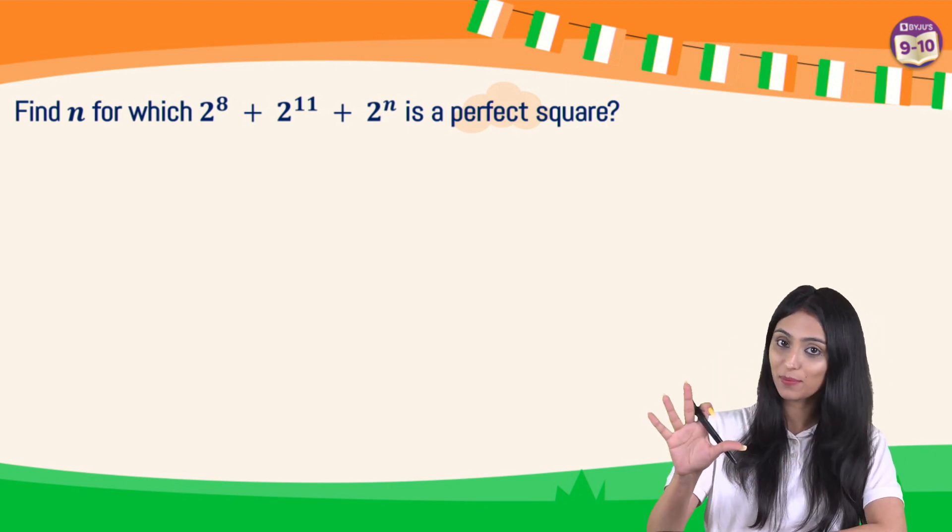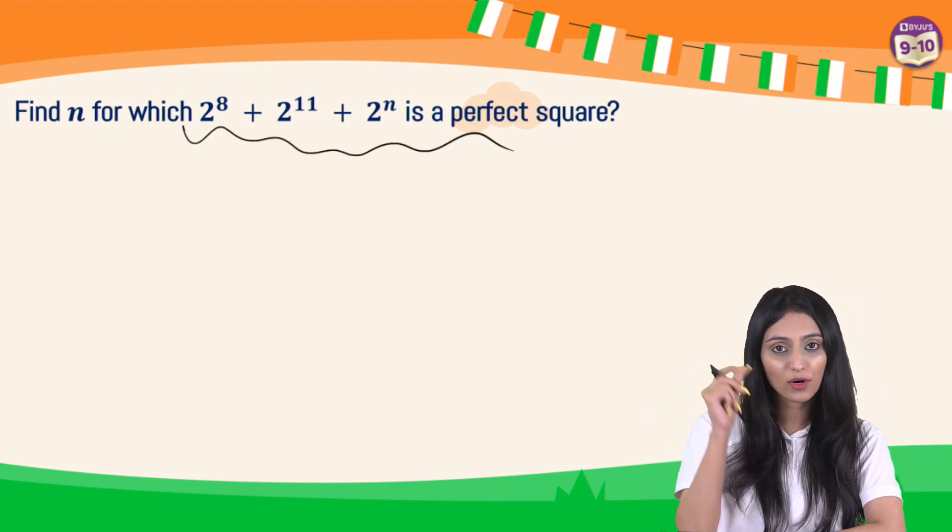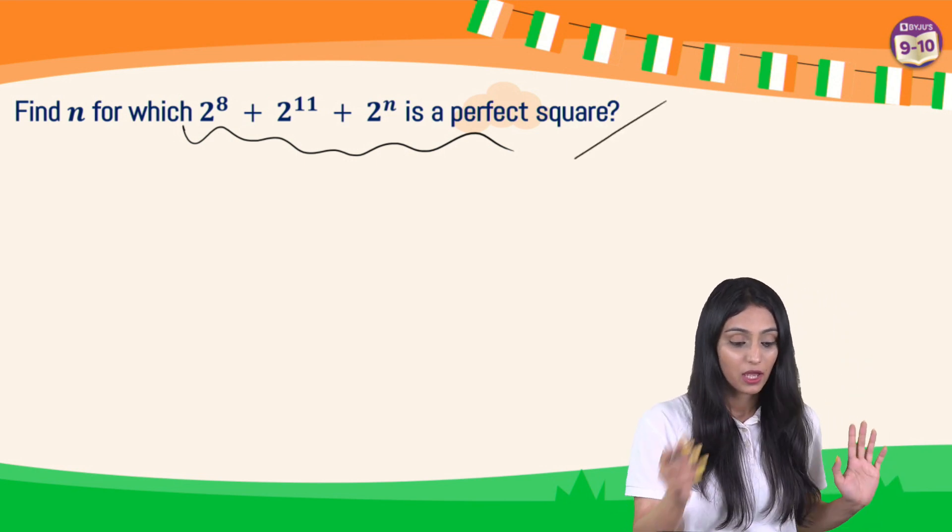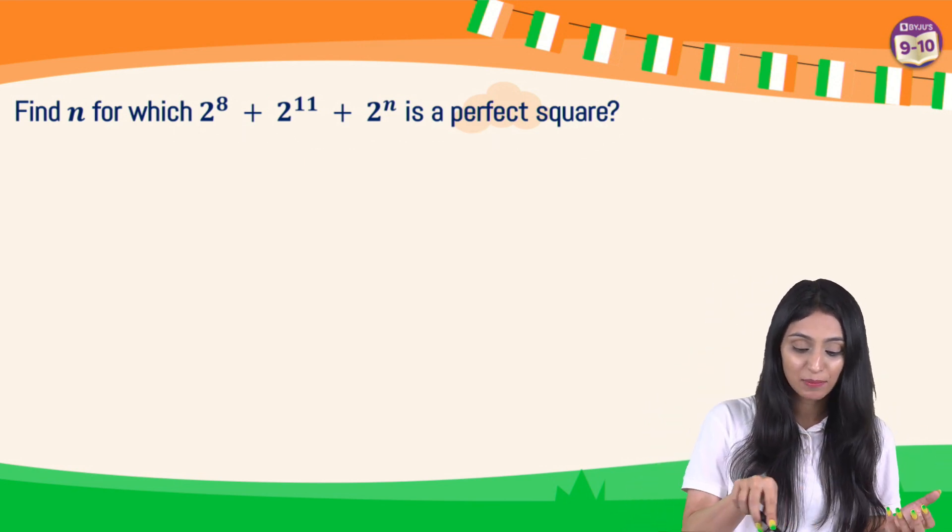Now the question is already specifying that this is a perfect square. We have to look for that value of n that makes it a perfect square. So first, obviously we will have to simplify this expression.